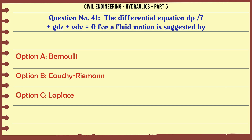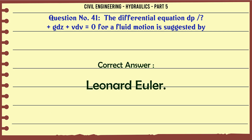The differential equation dp/γ + dz + v·dv/g = 0 for fluid motion is suggested by: A. Bernoulli, B. Cochiriman, C. Laplace, D. Leonard Euler. The correct answer is Leonard Euler.